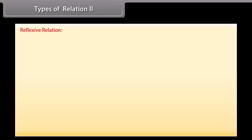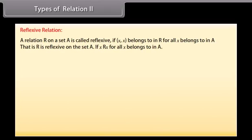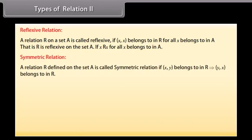Reflexive relation: A relation R on a set A is called reflexive if (x, x) belongs to R for all x belonging to A. That is, R is reflexive on the set A if x is related to x under the relation R for all x belonging to A. Symmetric relation: A relation R defined on the set A is called symmetric relation if (x, y) belongs to R implies that (y, x) belongs to R.